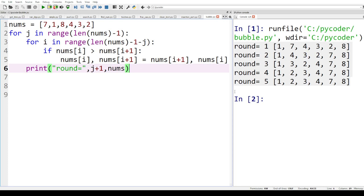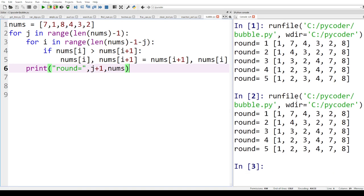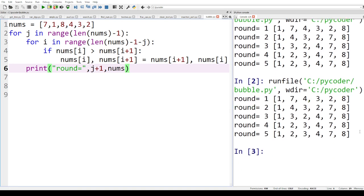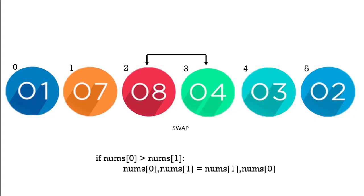Bubble sort is a basic sorting algorithm, but it is essential for any aspiring programmer. So grab a notebook and let's get started. The basic idea of a bubble sort is simple.